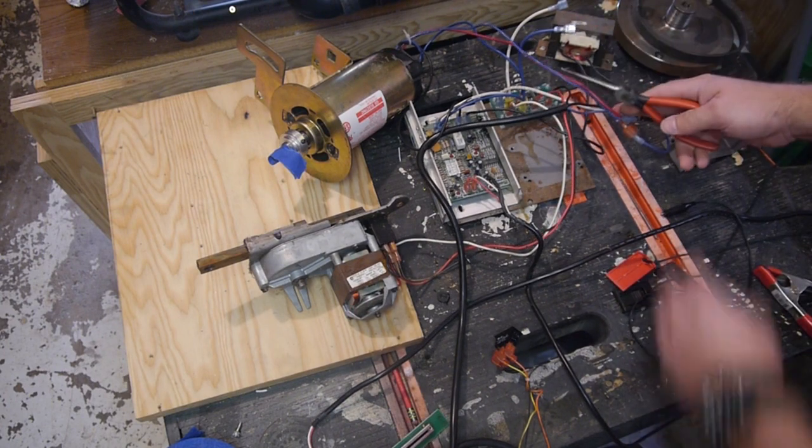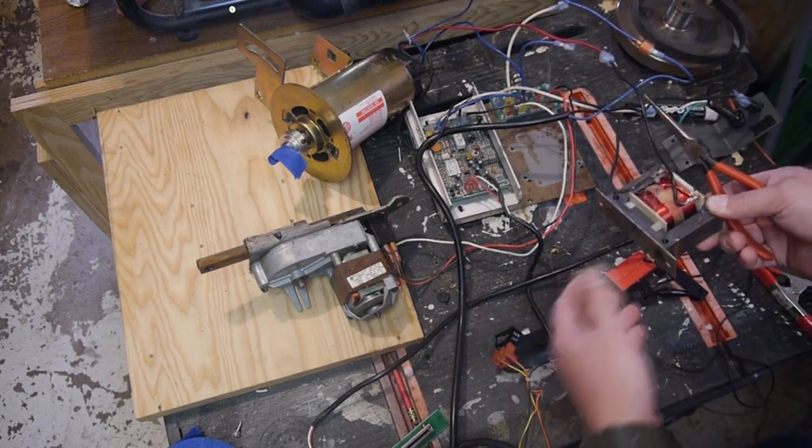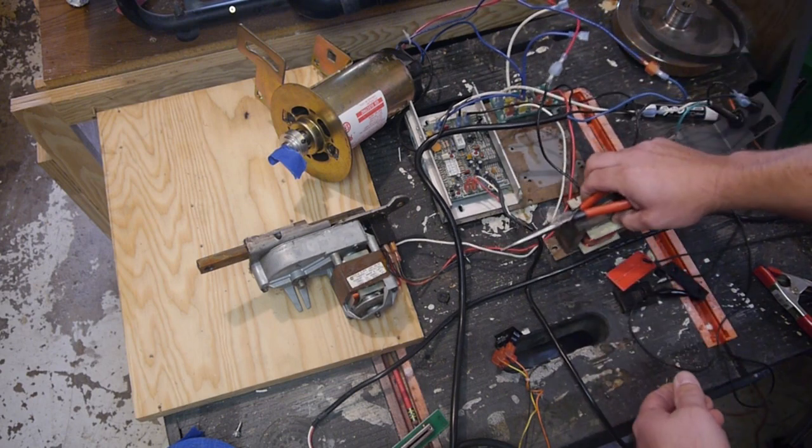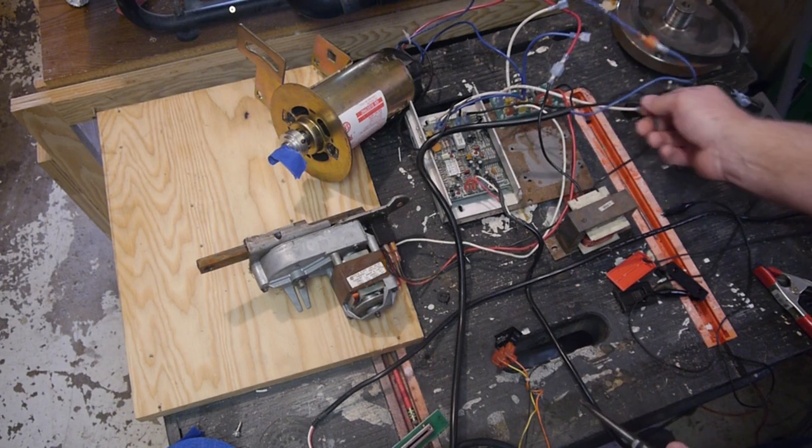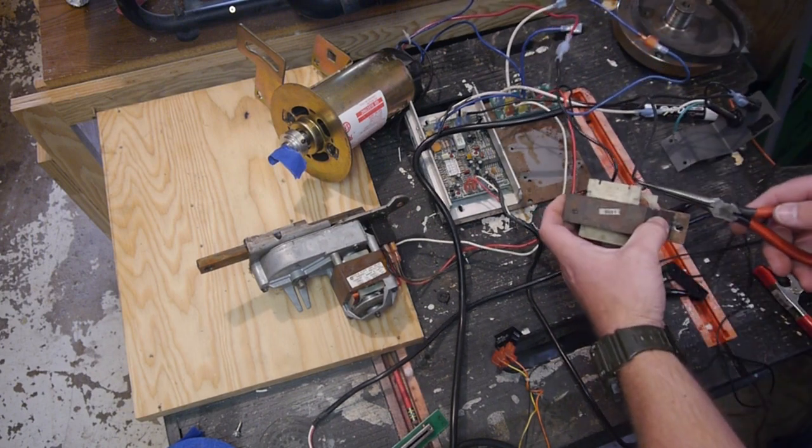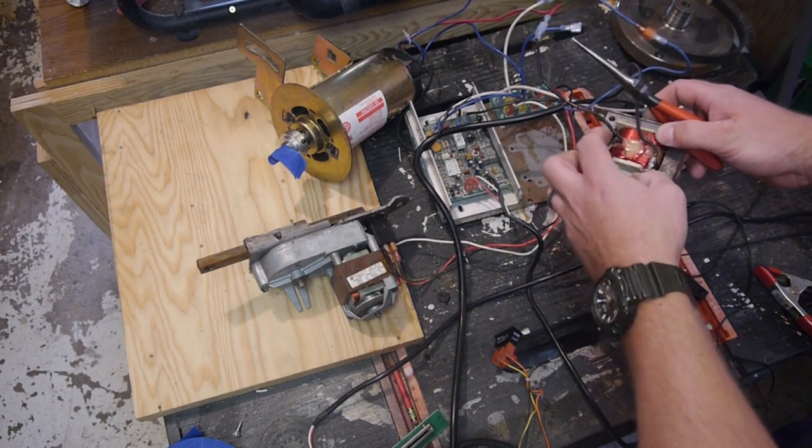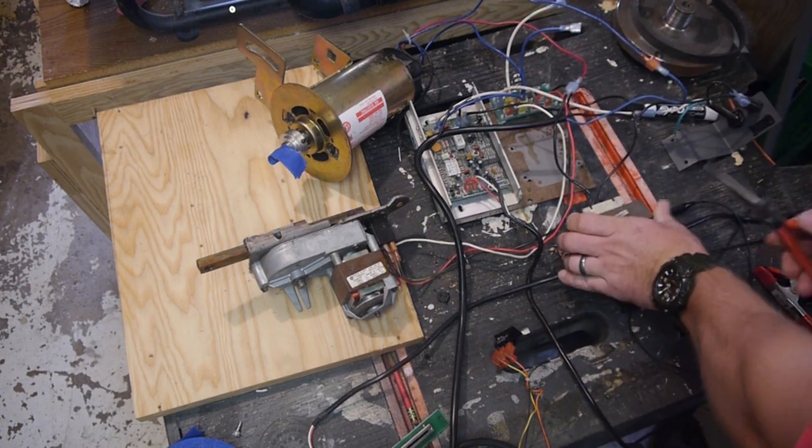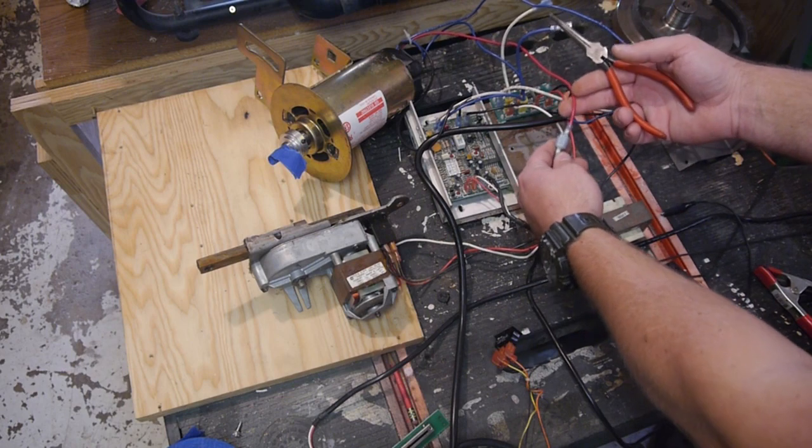All right, so what is this? I originally thought this was a transformer because it looks like a transformer. But what it is, it's a choke is what it's called, at least online. I'm not an electrical engineer, but I believe it's a choke. Because there's only one set of leads going in or out of it, and it's on the DC side, right?